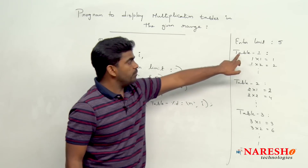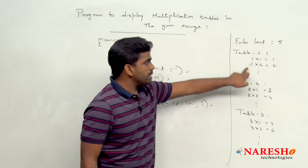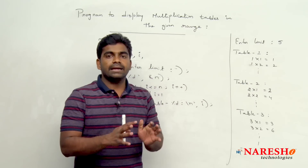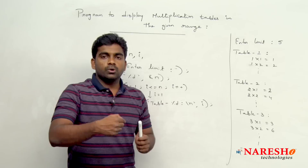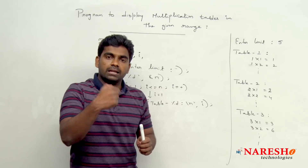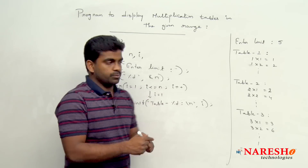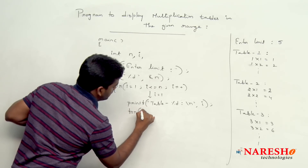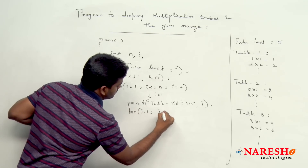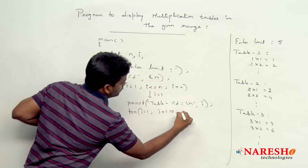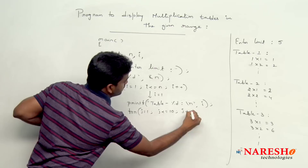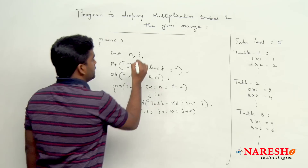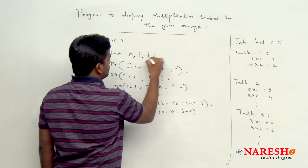After printing the table header, we need to print the pattern — 10 times we have to repeat this. So we use another for loop, which is called a nested for loop. For j value starts with 1, j is less than or equal to 10, j plus plus.